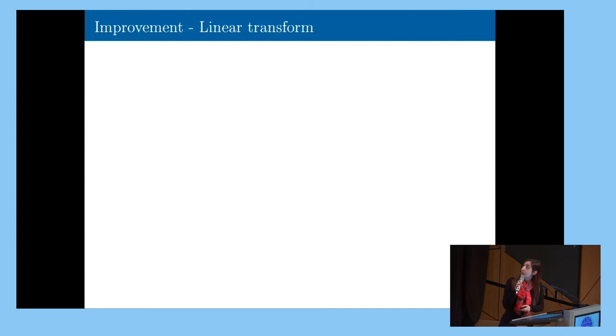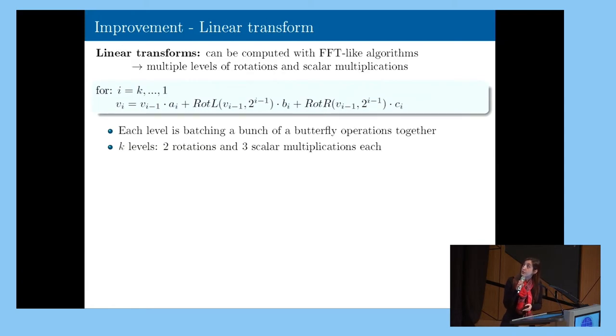So the second improvement we have is in the linear transforms. Coef to slot and slot to coef are linear transforms. They are performed on every bootstrapping, and they are the most costly part of the entire evaluation. So we observed that the linear transforms can be computed with FFT looking-like algorithms, which are composed by multiple levels.